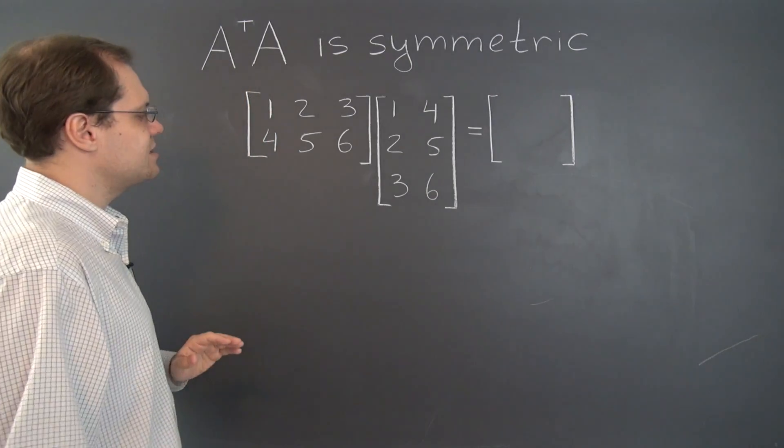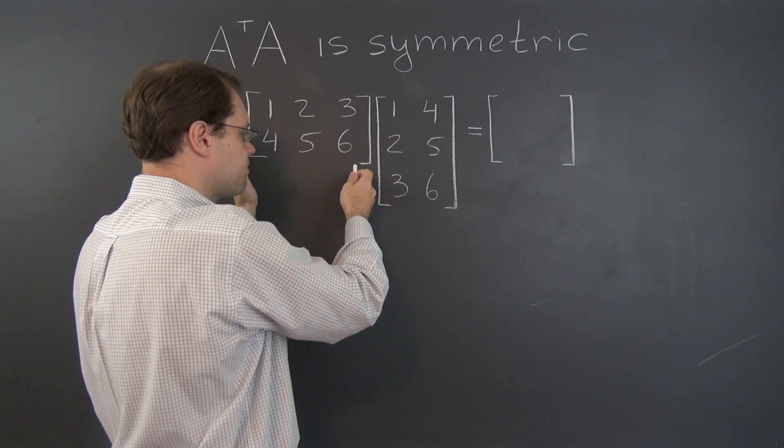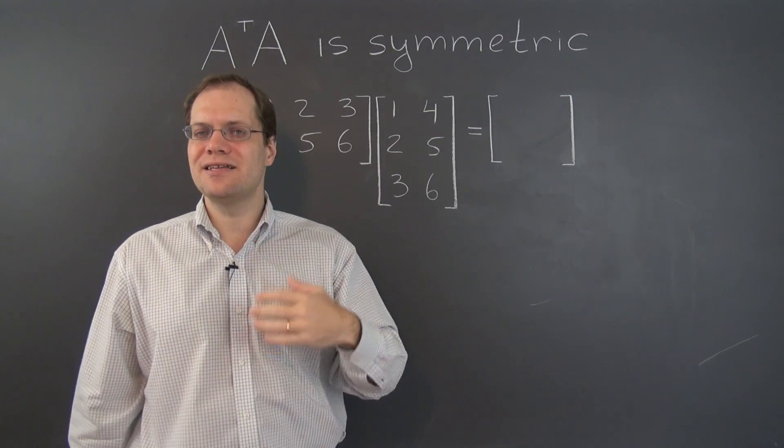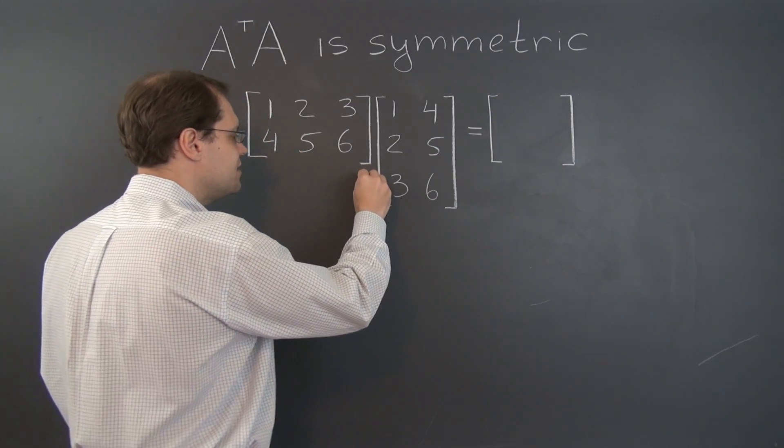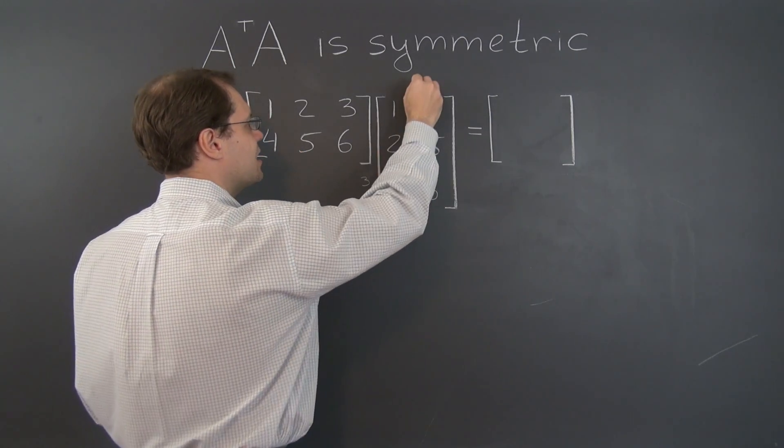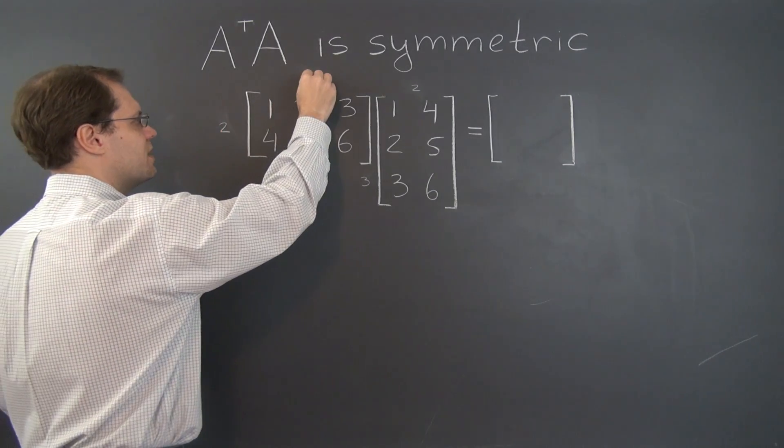The first thing to realize is that when you're multiplying a matrix A by its transpose, the two matrices are necessarily compatible. Their inner dimensions match, because if the initial matrix A is 3 by 2, then A transpose is 2 by 3.